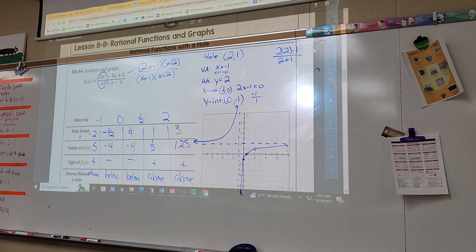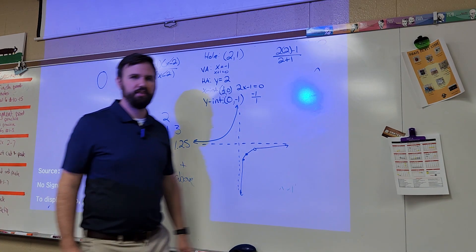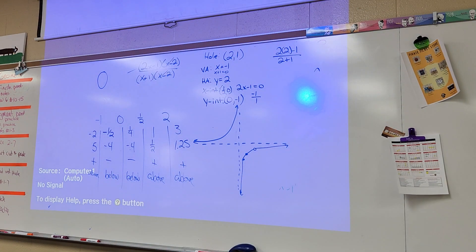Give problems 9 through 12 a shot. Use 3 through 8 as a guide. For 9 through 12, look at your asymptotes and zeros and come up with the function — reverse engineer it. You should be able to do 1 and 2 now. Those are just like what we did in class.